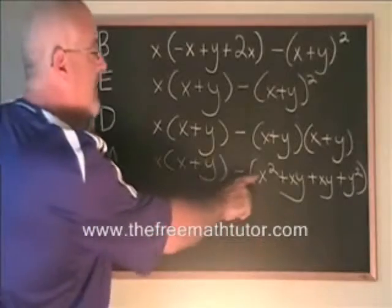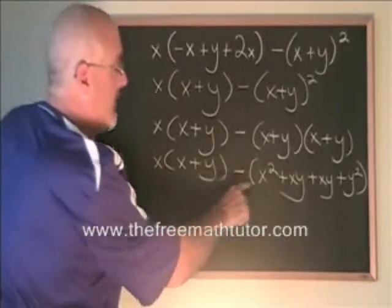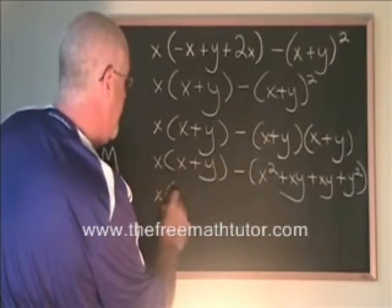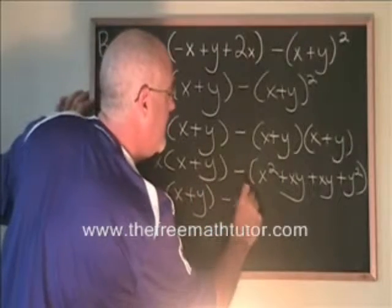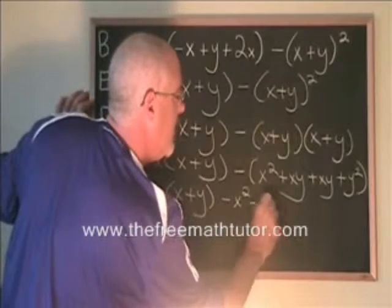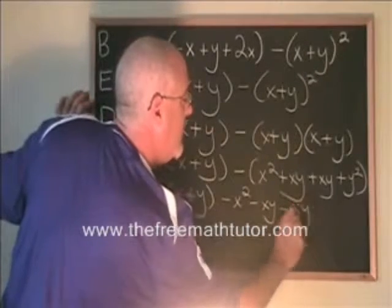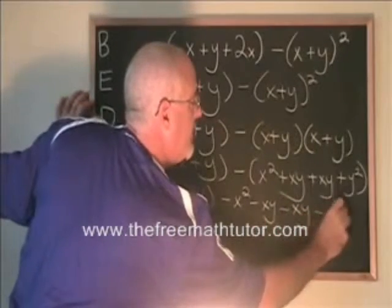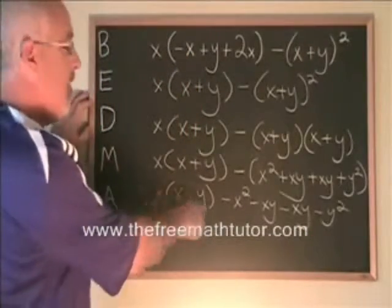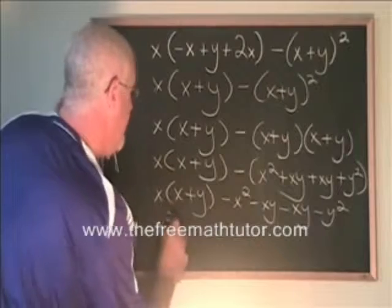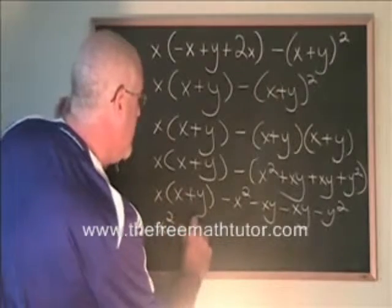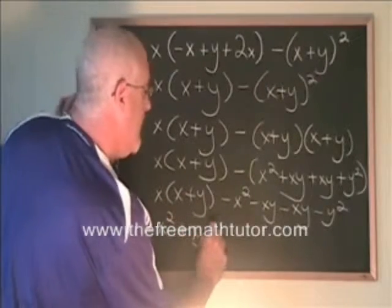Now I just have to remove the bracket and fix the signs. We have minus x squared, minus xy, minus xy, minus y squared. Now I'm doing this multiplication. x times x is x squared, x times y is xy. I copied on the rest.